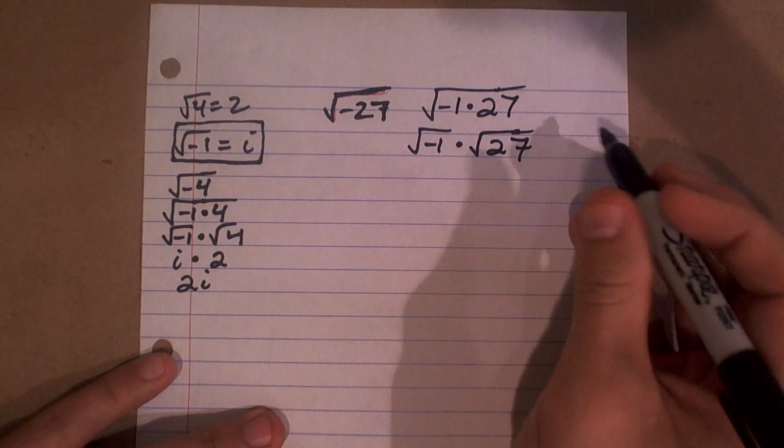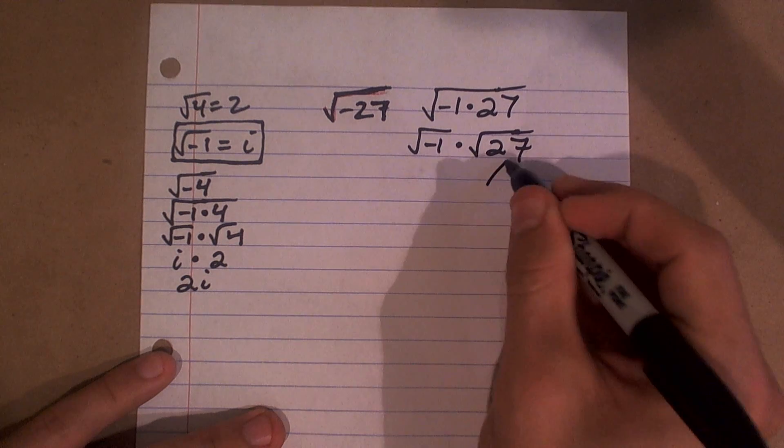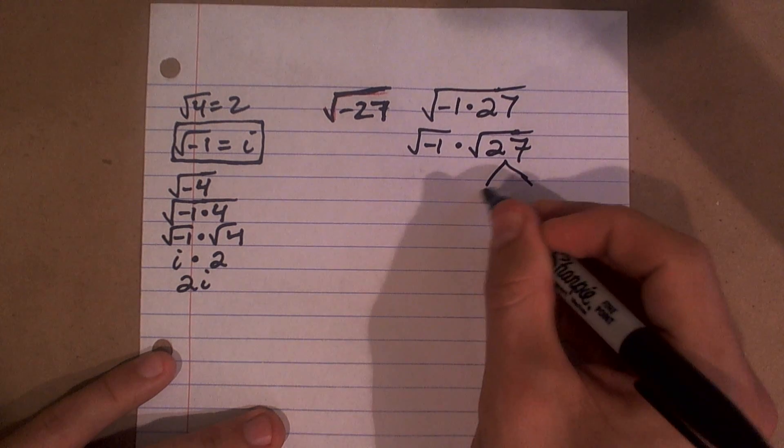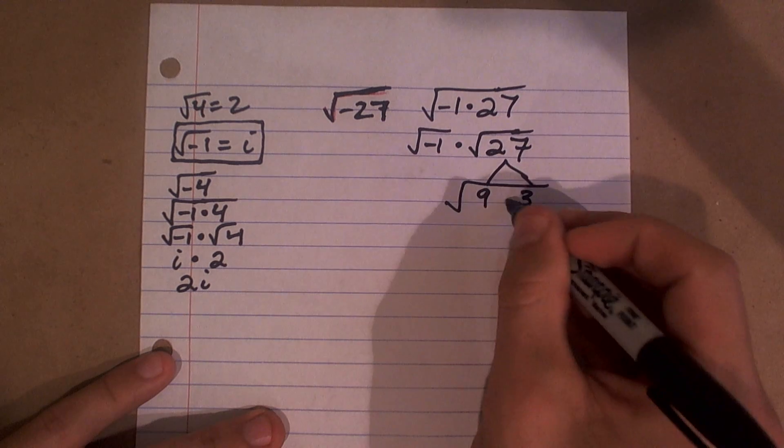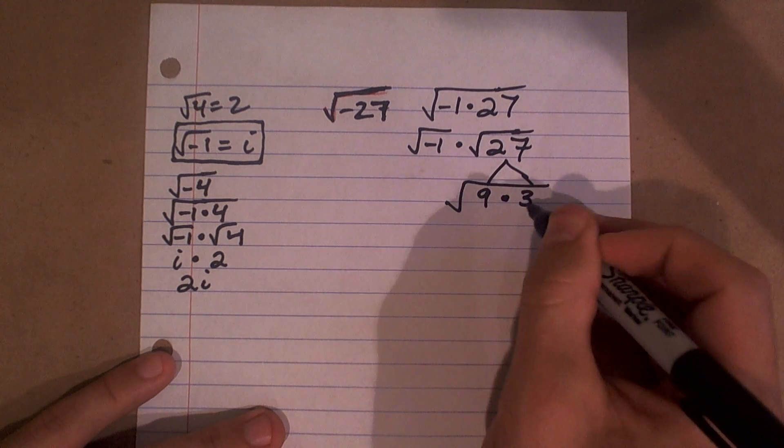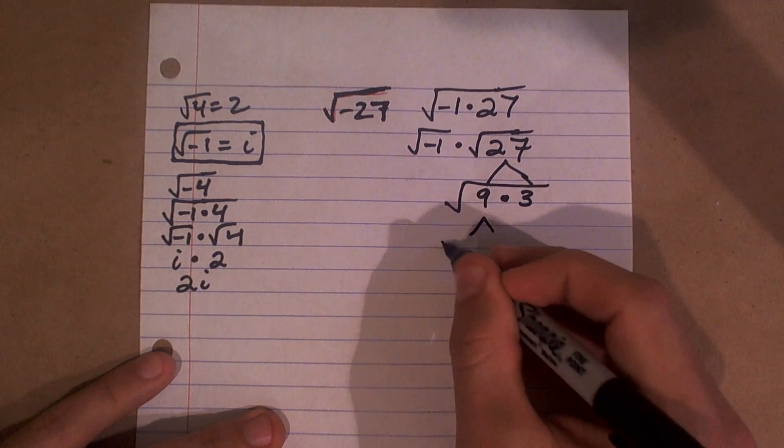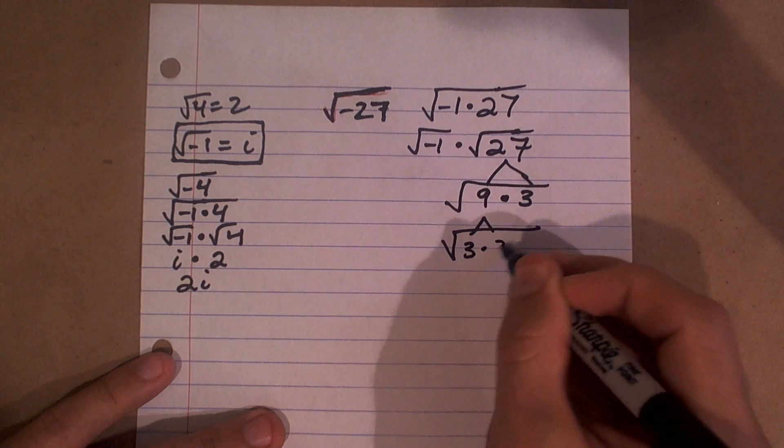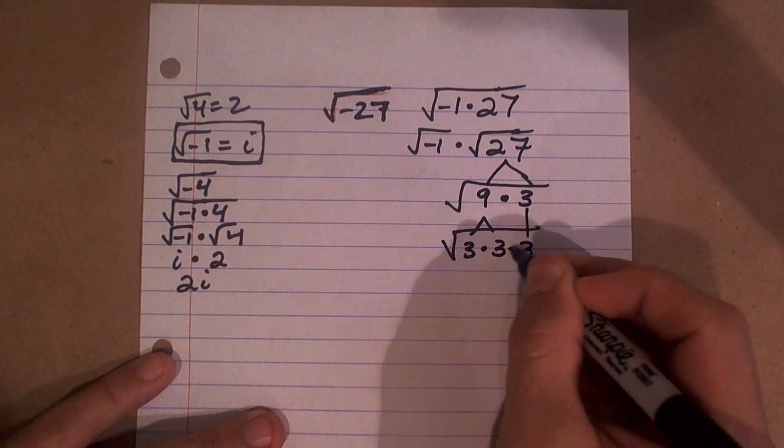There's a couple ways to do this. For this problem I'll show you how to factor it. I can factor 27 as 9 times 3. So 27 is the same thing as the square root of 9 times 3, which is the same thing as 3 times 3 times 3.